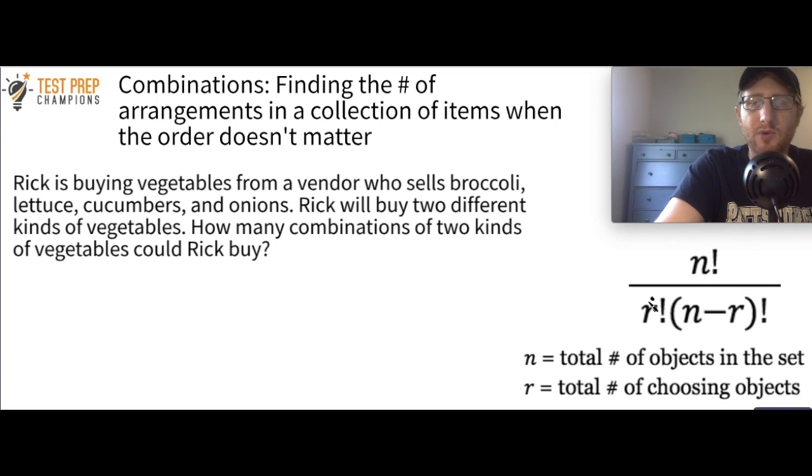We have here n factorial divided by r factorial times n minus r factorial. And you might be wondering what in the heck does all this mean? So don't worry, it's really actually a lot simpler than it looks. So n equals the total number of objects in the set. So what are our objects here? Our objects would be broccoli, lettuce, cucumbers, and onions. So our n here is going to be 4. But we don't just want to plug 4 into the formula because it's n factorial. So what we really do is we start with n, which is 4, and we do 4 times 3 times 2 times 1. And we don't even need to write times 1 because anything times 1 is just itself.